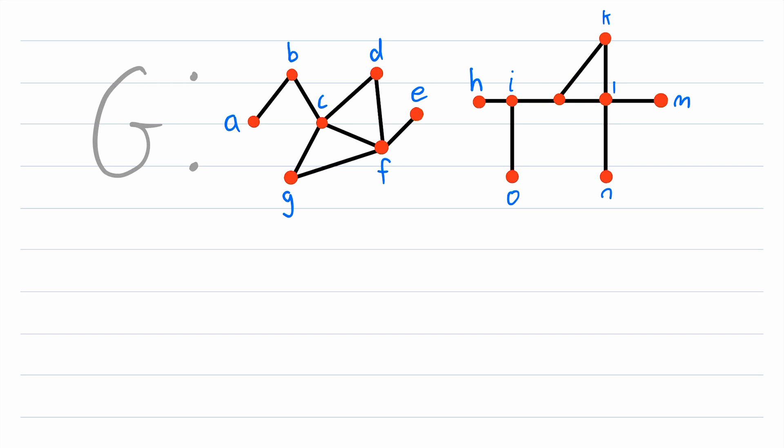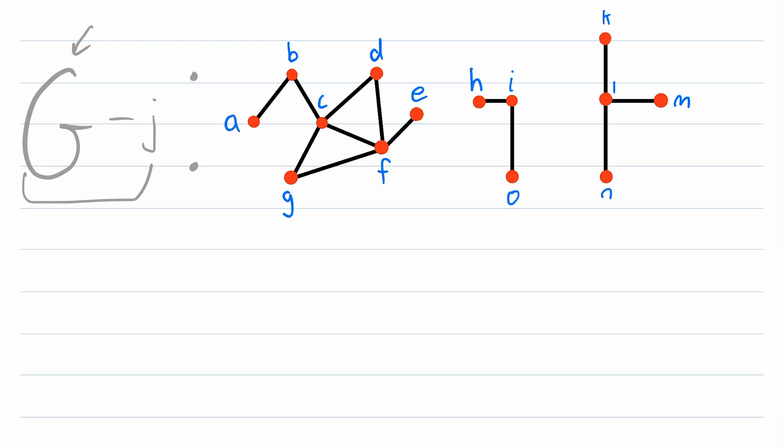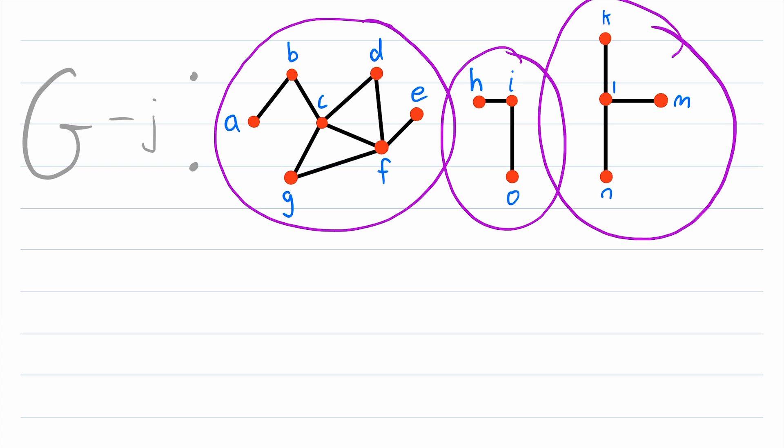We'll erase the vertex J as well as all of its incident edges. So now, technically, the graph we're looking at is not G, but it's G minus J. So this is the graph G without the vertex J and without the edges incident to J. How many components are in this graph? Well, we see there's one, two, three components in the graph.